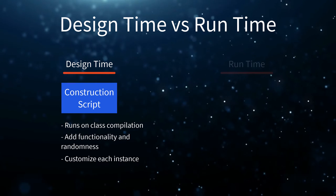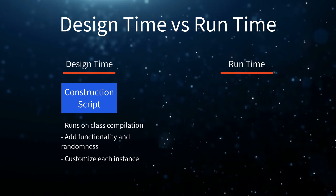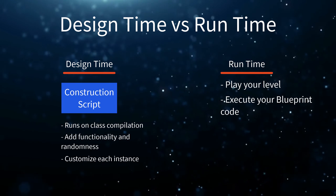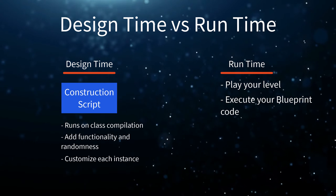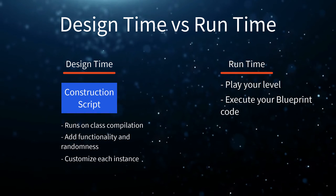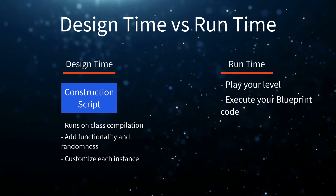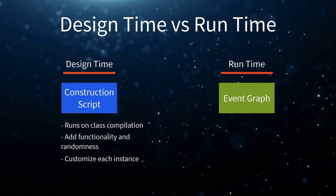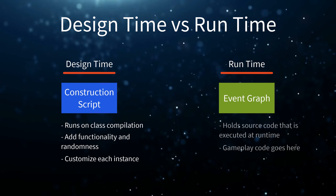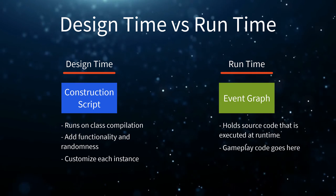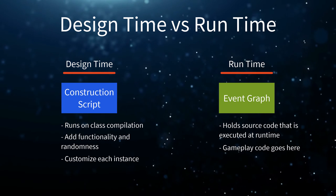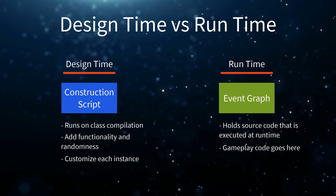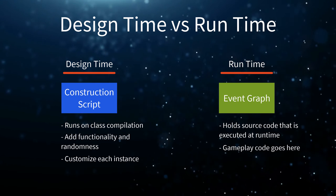The other state is often called runtime, and it refers to what happens when Unreal is actually running your game. To enter runtime, simply click play on the top bar. This is where our event graph comes into play. The event graph holds all the source code that will be executed at runtime. So if you want to add functionality that happens while the game is running, this is where we will add it.